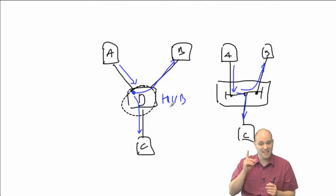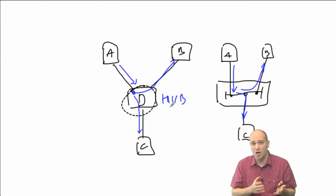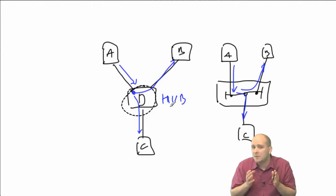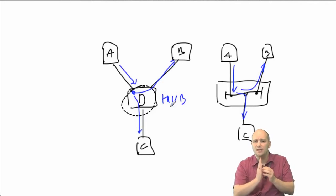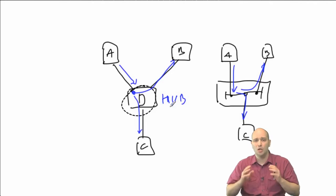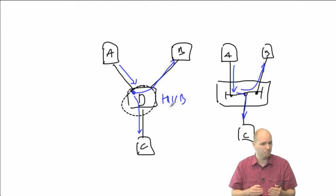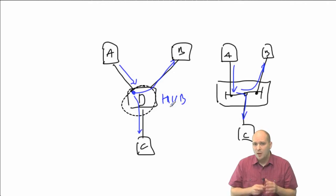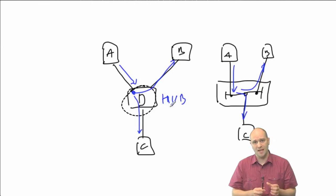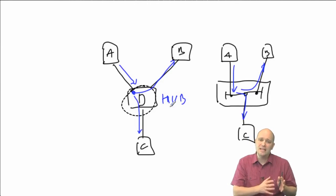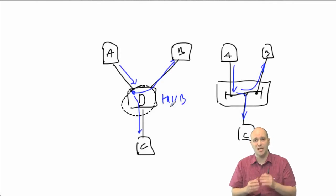We needed something else — something to break this collision domain apart and allow multiple stations to transmit at the same time. This is where bridges came into play. Bridges are designed to break up collision domains and allow for increased traffic between different stations that may be in different collision domains.